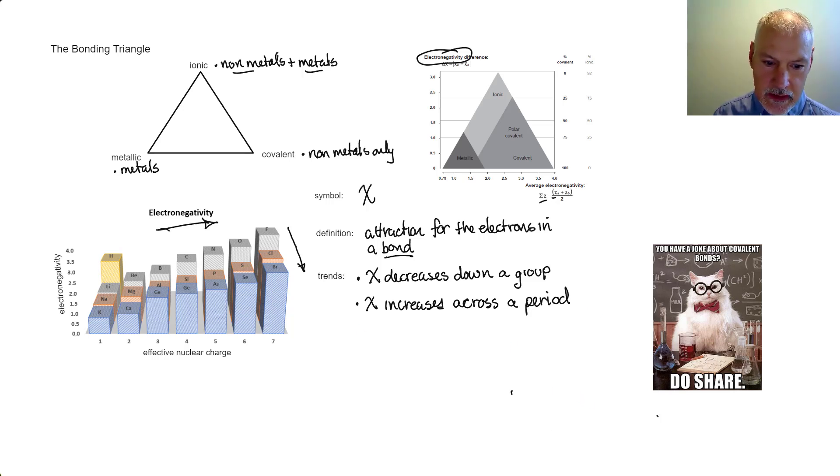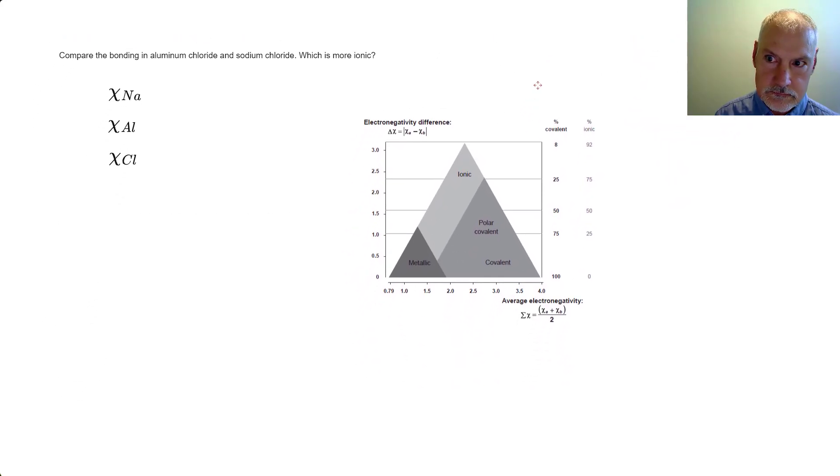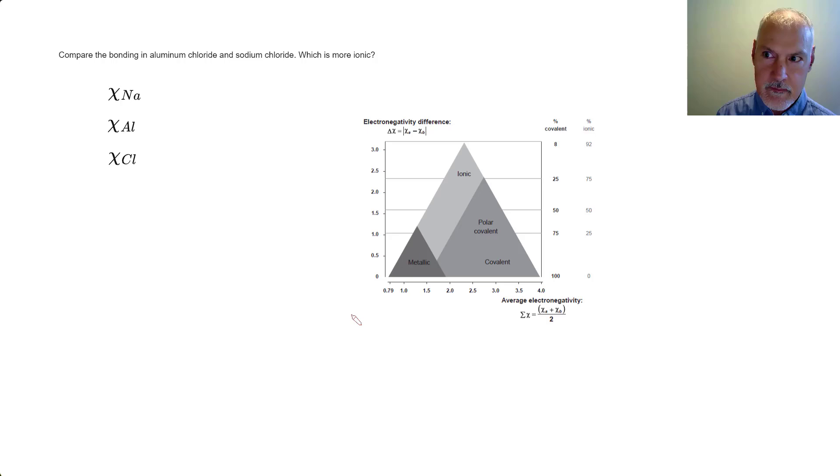So now let's do a question dealing with the use of this triangle. I want to compare the bonding in aluminum chloride to that in sodium chloride, which is more ionic? First thing I'm going to need are values of electronegativity. So from our periodic table, sodium is 0.9, aluminum is 1.6, and chlorine is 3.2.